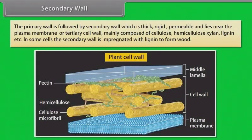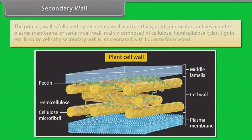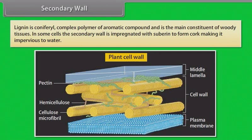The secondary wall is thick, rigid, permeable and lies near the plasma membrane. It is mainly composed of cellulose, hemicellulose, xylan, and lignin. In some cells, the secondary wall is impregnated with lignin to form wood; lignin is a complex polymer of aromatic compounds and is the main constituent of woody tissues. In some cells, the secondary wall is impregnated with suberin to form cork, making it impervious to water.